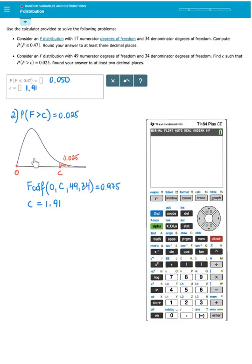So that is what I am saying. FCDF, find the area between 0 and some mystery number C with 49 degrees of freedom for numerator and 34 degrees of freedom for denominator such that this function produces 97.5% of data under the curve within the specified interval.